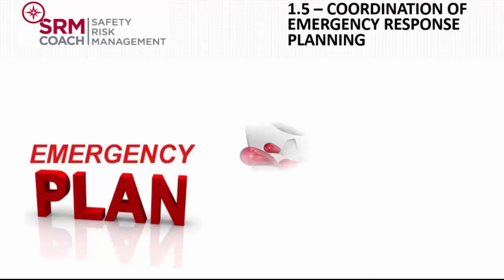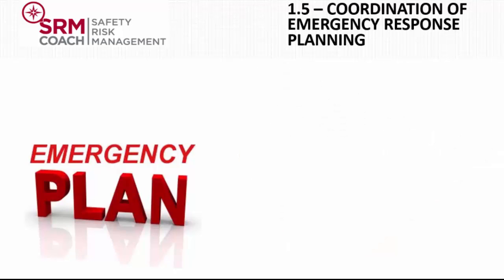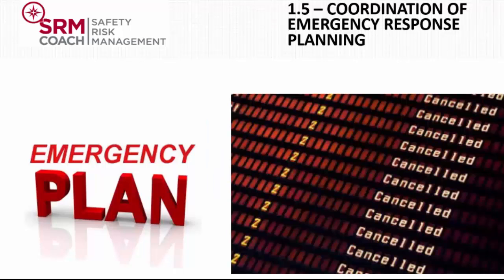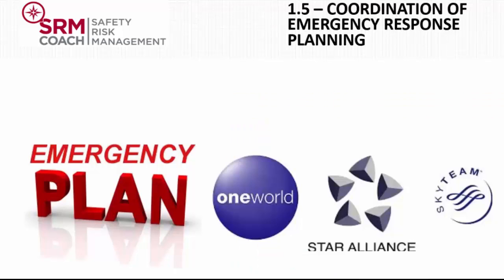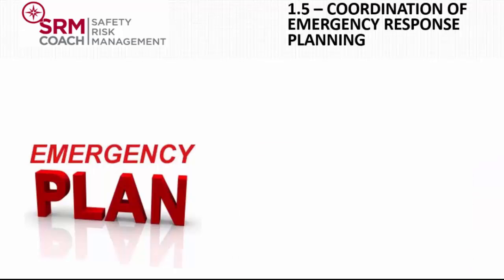A big part which is sometimes forgotten in an SMS is emergency response planning. It seems a bit contradictory — aren't we trying to prevent an accident with SMS? The emergency response plan is there to ensure that if a major crisis happens, the organization is ready to respond effectively. A crisis can be anything, ranging from airport closure, big weather emergencies, an accident of a carrier in the same alliance with your passengers on board, or even your own aircraft having an accident. Remember, it's always possible. Zero accidents are impossible to guarantee. The emergency response plan is important first for operational safety — in the confusion of the first crisis, a second one could happen.